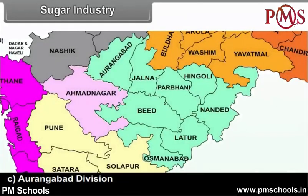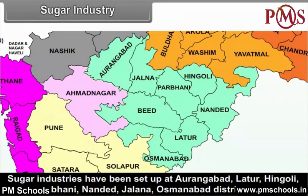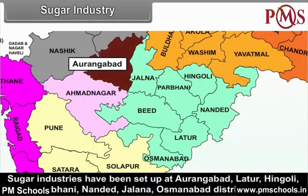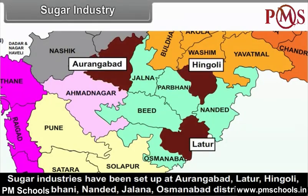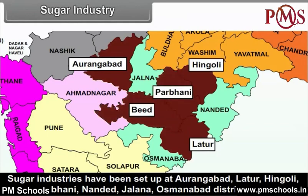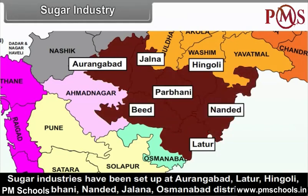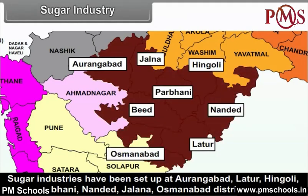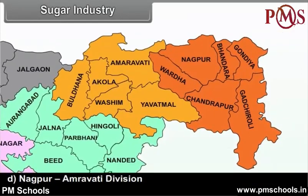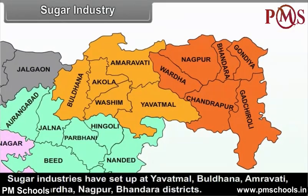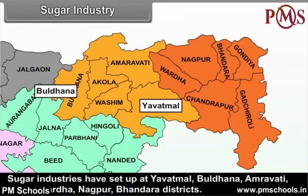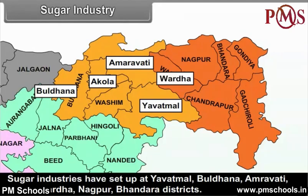In the Aurangabad division, sugar industries have been set up at Aurangabad, Latur, Hingoli, Beed, Parbhani, Nanded, Jalna and Osmanabad districts. In the Nagpur-Amravati division, sugar industries have been set up at Yavatmal, Buldana, Amravati, Akola, Wardha, Nagpur and Bhandara districts.